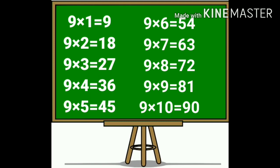Again: nine ones are 9. Nine twos are 18. Nine threes are 27. Nine fours are 36. Nine fives are 45. Nine sixes are 54. Nine sevens are 63. Nine eights are 72. Nine nines are 81. Nine tens are 90.